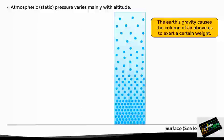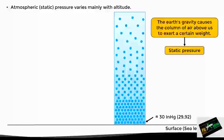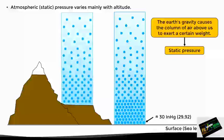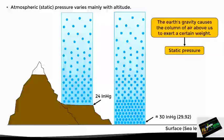This weight that we feel from the air column above is precisely the static pressure. At sea level, this static pressure is approximately 30 inches of mercury — to be exact, under standard conditions this is 29.92 inches of mercury, however this value may vary slightly depending on the weather conditions. As we climb in the atmosphere, we experience less static pressure. For example, if we climb a mountain, the column of air above is shorter, meaning there is less air exerting weight on us and therefore the static pressure is reduced. In this example, at this part of the mountain we measure a pressure of 24 inches of mercury, which is obviously less than the pressure at sea level.